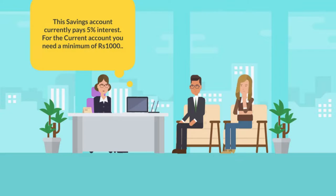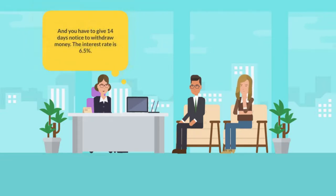This savings account currently pays 5% interest. For the current account you need a minimum of 1,000 and you have to give 14 days notice to withdraw money. The interest rate is 6.5%. Okay, I'll go for the savings account. How much would you like to deposit? 500.